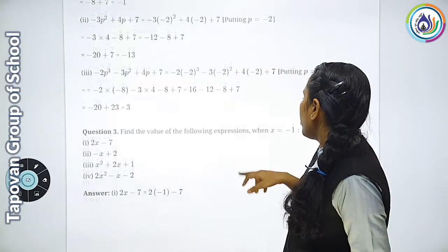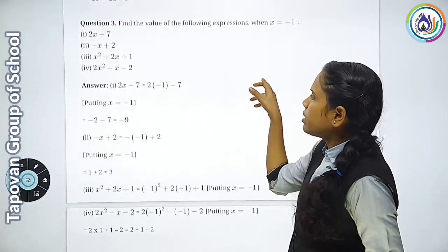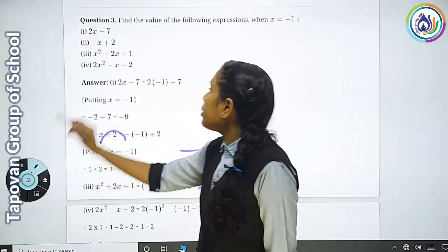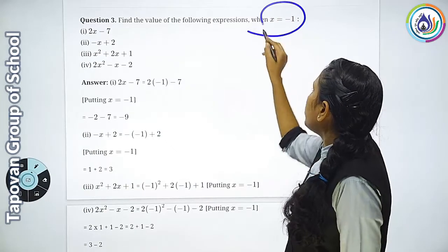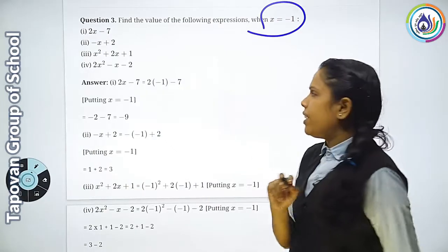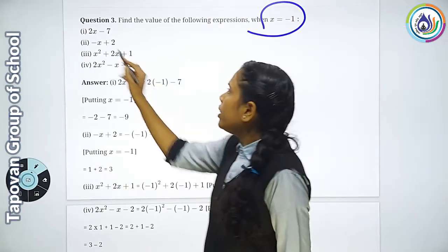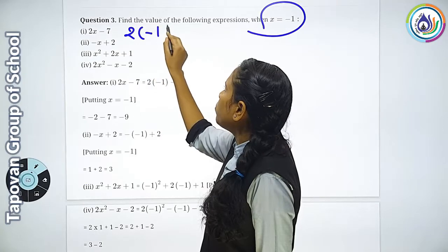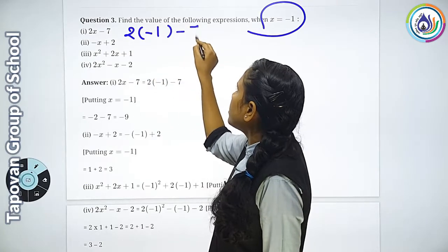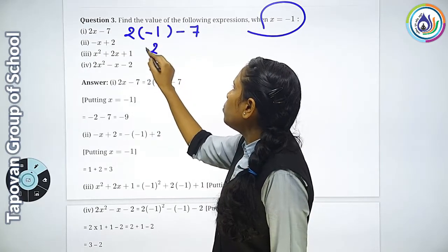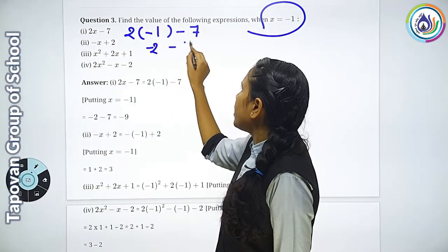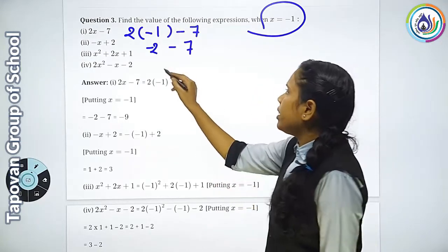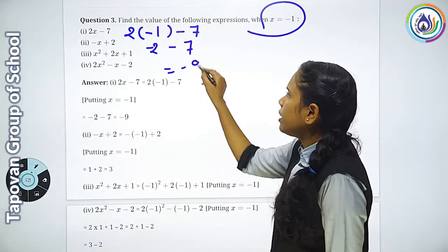Question number 3: find the value when x is equal to minus 1. जहाँ पर भी x लिखा हो, x की value minus 1 रखनी है। First: 2x-7 = 2×(-1)-7 = minus 2 minus 7 = minus 9.